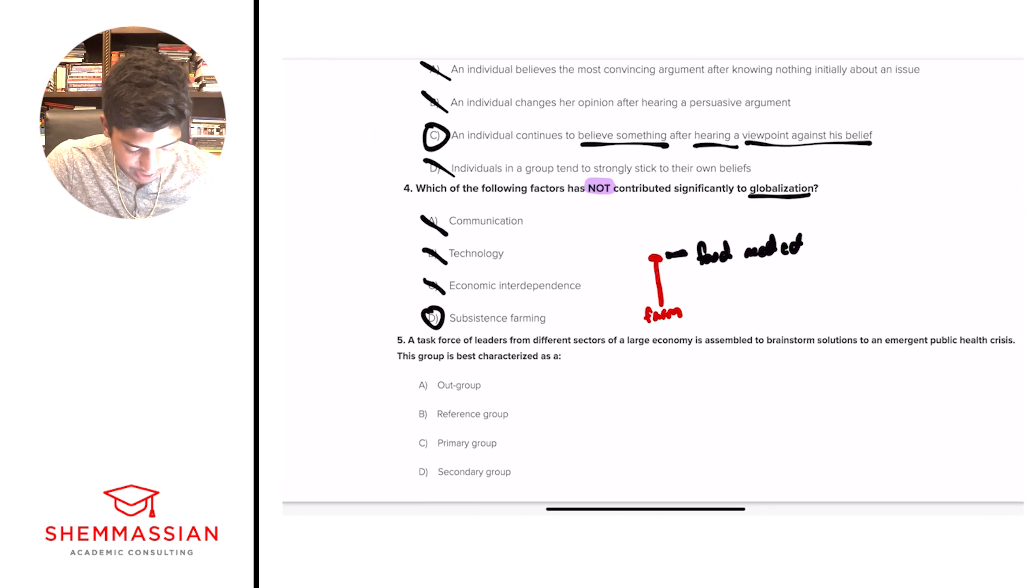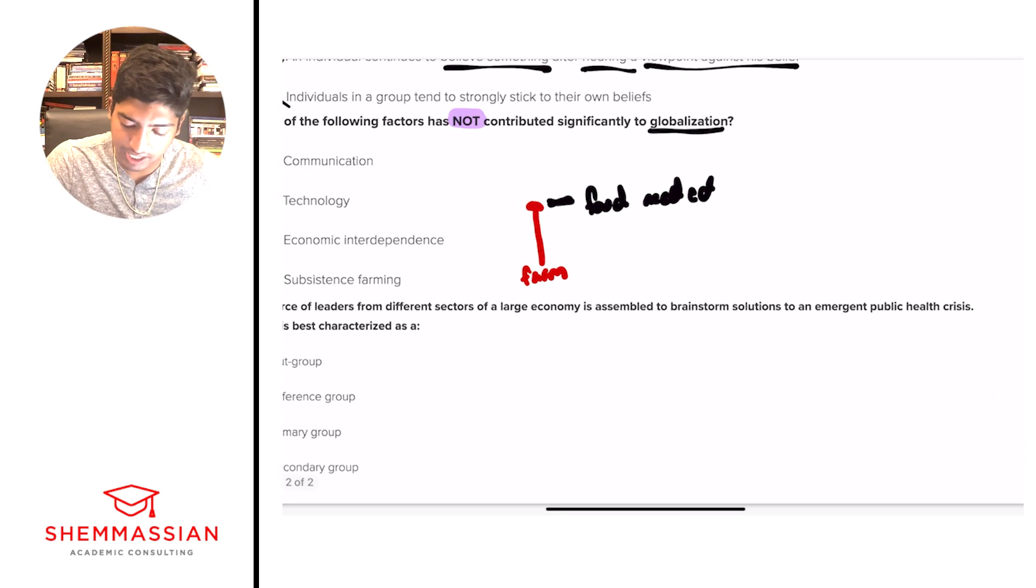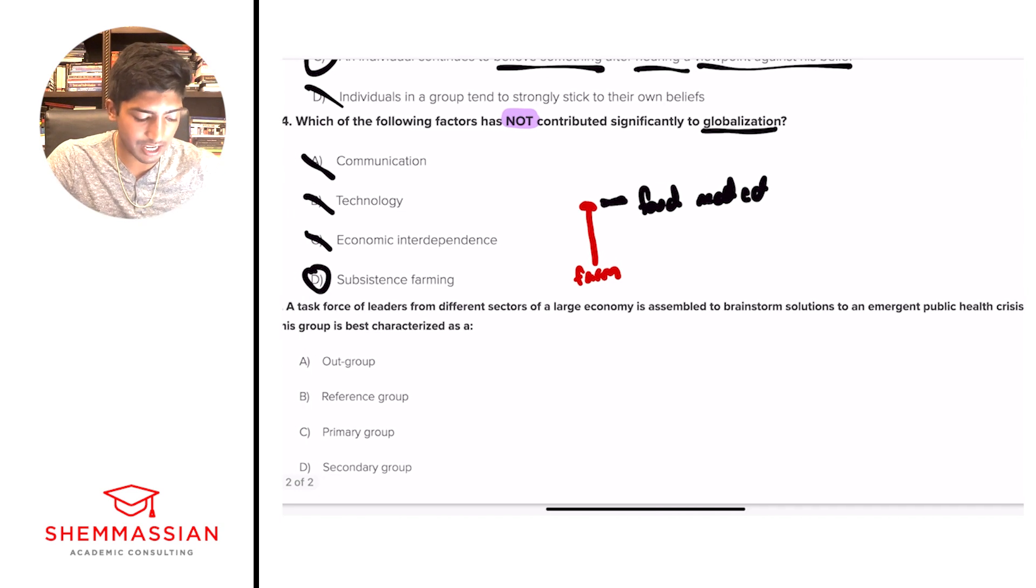Question number five. A task force of leaders from different sectors of a large economy is assembled to brainstorm solutions to emergent public health crisis. This group is best characterized as A, outgroup, B, reference group, C, primary group, or D, secondary group? This is requiring us to understand these terms again. These terms will come up over and over again. We have a situation we're going to apply these terms to. Task force of leaders from different sectors to brainstorm solutions. They have a goal, basically, to brainstorm solutions, but the main important thing is that they're leaders from different sectors—they're not in the same sector originally.